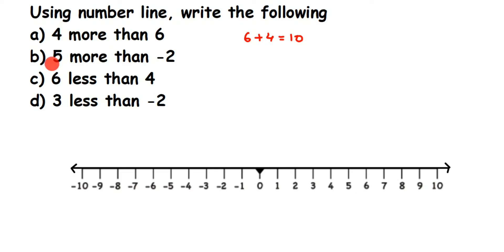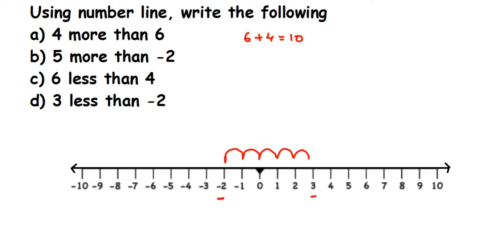The second question says five more than minus 2. Five more than minus 2 — minus 2 is here on the number line. We have to add 5 more to this, so starting from minus 2 we move: 1, 2, 3, 4, 5 — and we end at 3. So the answer is 3. When writing this: 5 more than minus 2 is 5 plus minus 2, which equals 3.